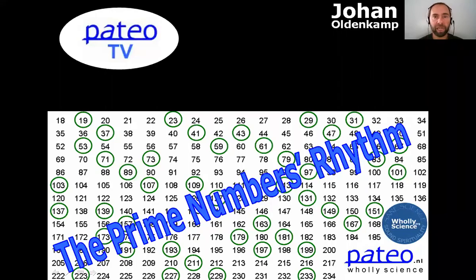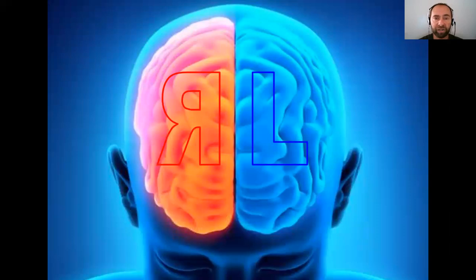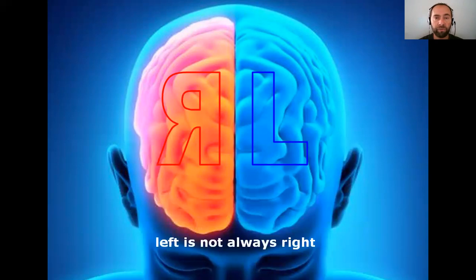Welcome to Pateo Television. My name is Johan Obenkamp and in this 41st episode of Pateo TV we will talk about the rhythm in the prime numbers. Seven years ago I discovered this rhythm and made a video about it with a friend. The video is still available on YouTube. I noticed that not everybody really understands or appreciates this rhythm, especially people who have a dominant left hemisphere. But we should remember that left is not always right. So in this video I'll try again to explain it as clearly as possible.